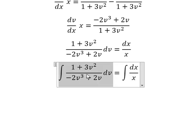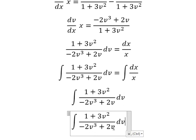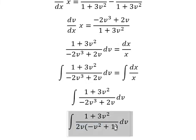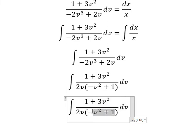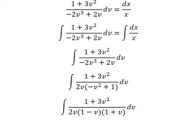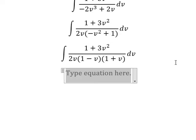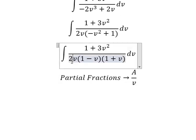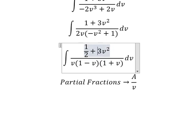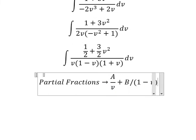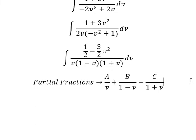Now I want to focus on this integral. We can do factorization — we can factor it into 1 minus v and 1 plus v. So we use partial fractions. I put A over v, with coefficient 1 over 2, and then B over 1 minus v and C over 1 plus v. Now we find a common denominator.